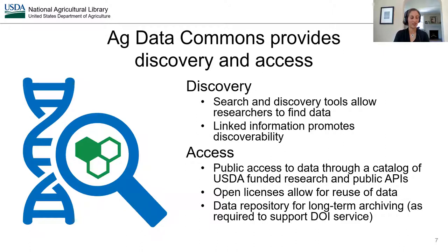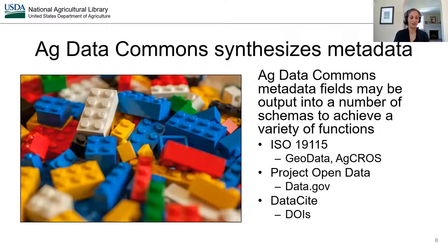The Ag Data Commons provides discovery and access as its core function. Search and discovery tools and linked information promote findability. We enable access through the catalog and public APIs, use of open licenses, and DOIs for digital assets. I like the analogy of Lego blocks to represent Ag Data Commons metadata, because the pieces come in different colors, shapes, and sizes, and can be assembled in a variety of ways to perform a variety of functions. We often work with geospatial metadata, which must use the ISO 19115 standard, which underpins our internal systems because it's robust enough to handle information from other standards.